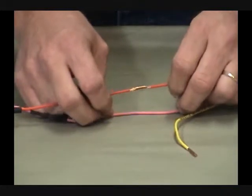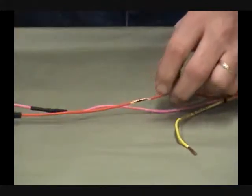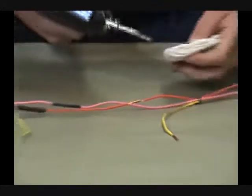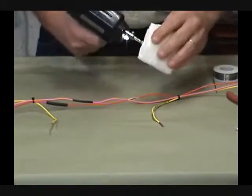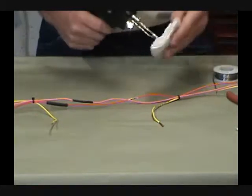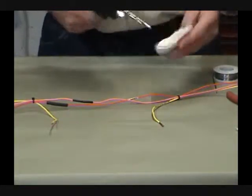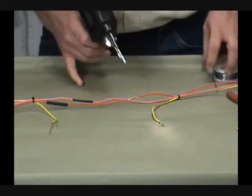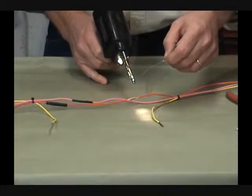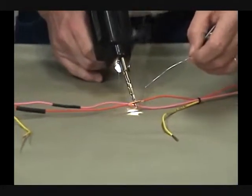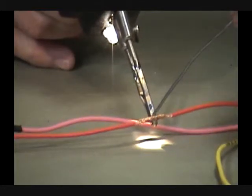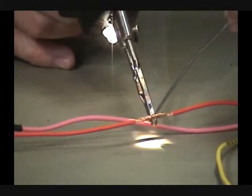After you have the wires twisted together, heat your solder and iron up, and then wipe the tip with your damp rag or sponge to get the impurities off. Apply a little solder to the end of the soldering iron and put it under the wire. The blob of solder on the tip will help transfer the heat to the wire faster.